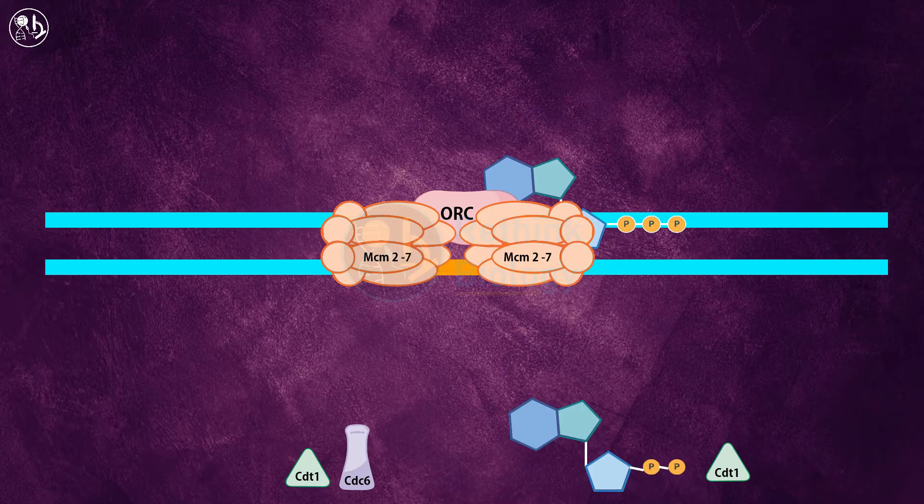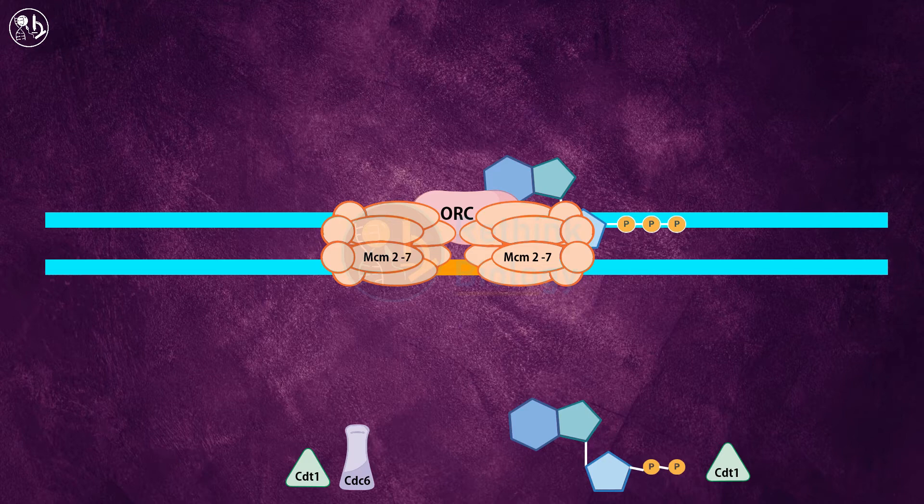Here the MCM complex functions as helicase. During the G1 phase, only the unwinding of DNA occurs.